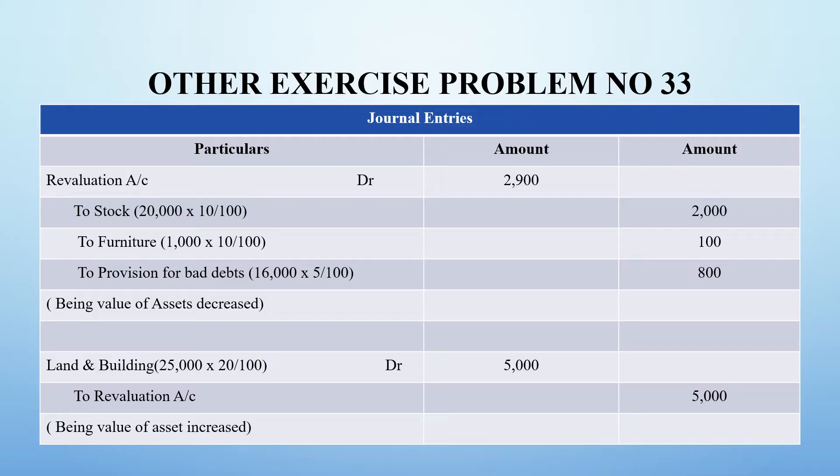The total depreciation/provision is 2,900. Land and building value has been increased, so it is on the credit side of the revaluation account - Land and Building Account debit to Revaluation Account for 5,000 rupees, which is 20% of 25,000 that has been increased.